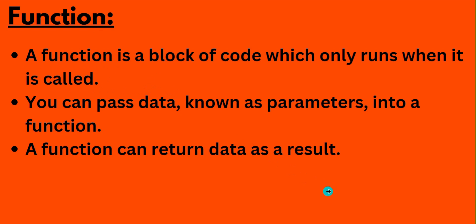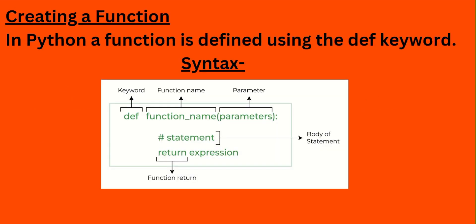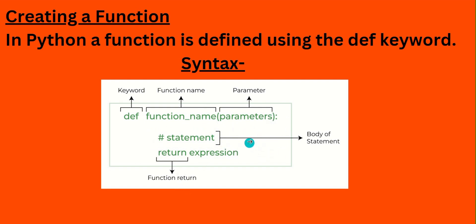A function is a block of code which runs only when it is called. To create a function, we have a syntax for this: the keyword 'def', followed by a function name and within parenthesis the parameters are passed. Below this you can write the function statements, and in the last line a return expression.